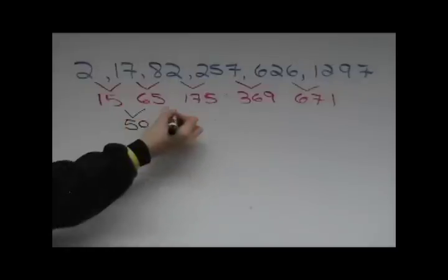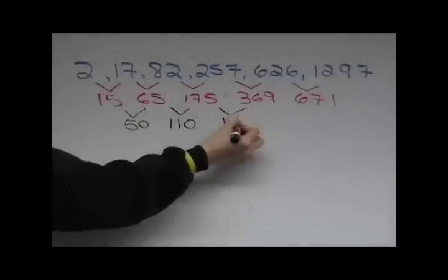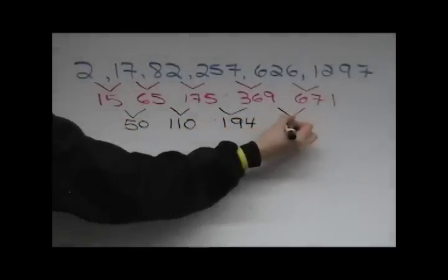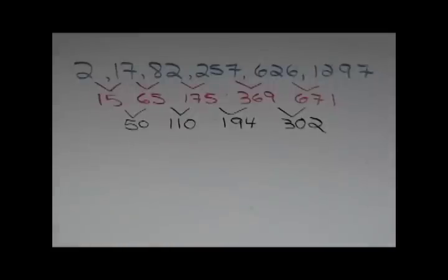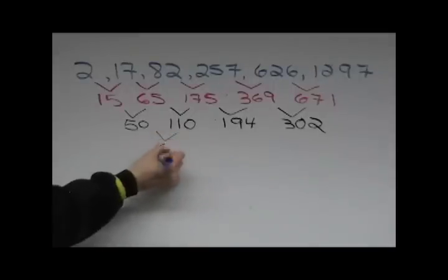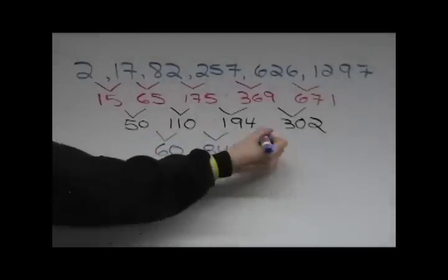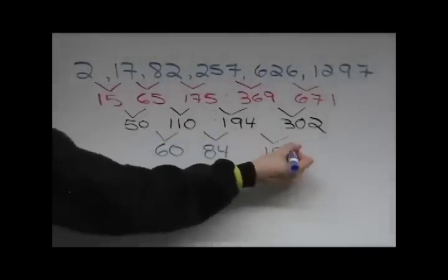After a check of the second row, we see the numbers getting even closer together, but we still don't have a common difference. In the third row, the numbers are even closer, but still not common.